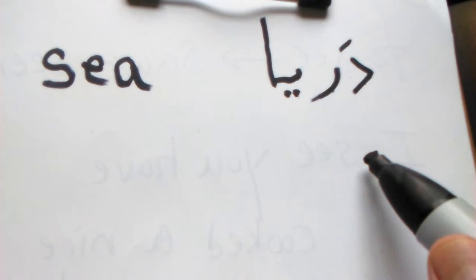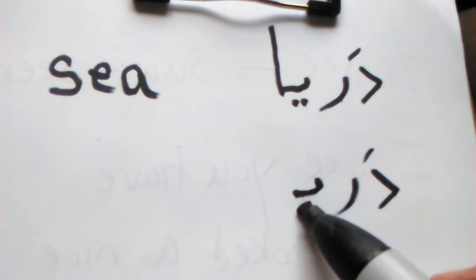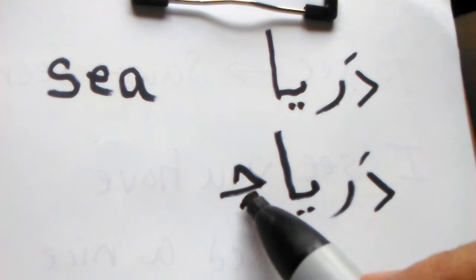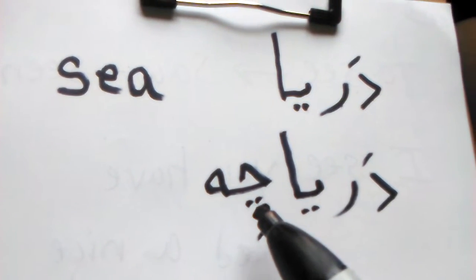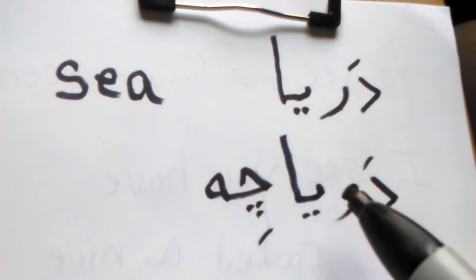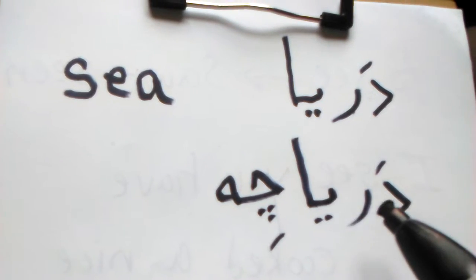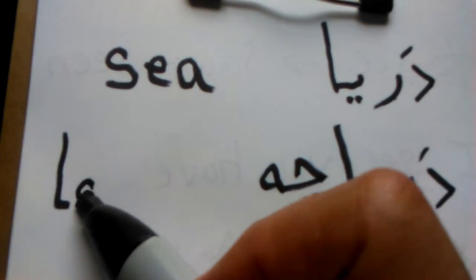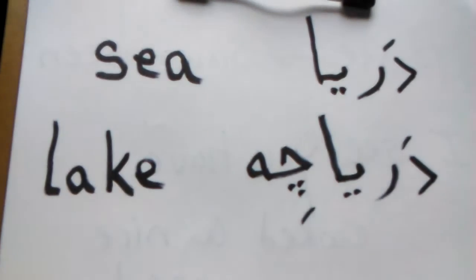So if you say دریاچه, دریاچه, a lot of times, any time you have چه at the end of the word, it almost means the little smaller size of whatever that is. So, small size دریا, small size sea is a lake. L-A-K-E, lake. دریاچه.